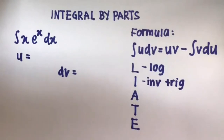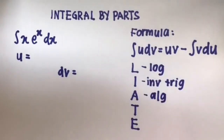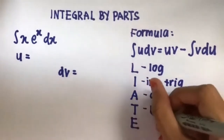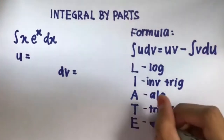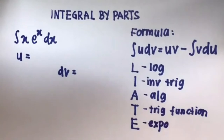I stands for inverse trigonometric function. A stands for algebraic, or polynomials — like x, x squared, or x cubed. T stands for trigonometric functions, like sine or cosine. E stands for exponentials, like e to the x. The trick is to follow these letters in sequence; the first one you find that you have is your U.